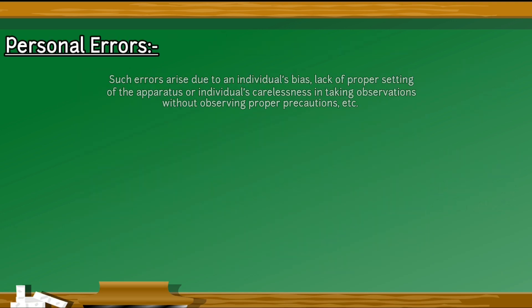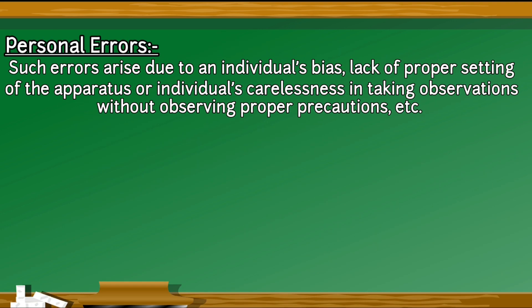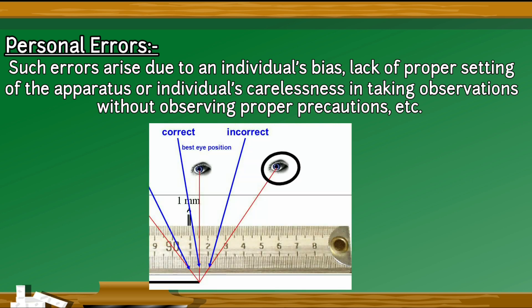Personal errors. Such errors arise due to an individual's bias, lack of proper setting of the apparatus, or individual's carelessness in taking observations without observing proper precautions, etc. For example, if you, by habit, always hold your head a bit too far to the right while reading the position of a needle on the scale, you will introduce an error due to parallax.